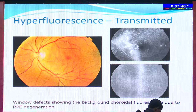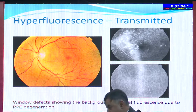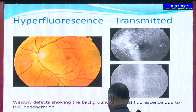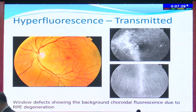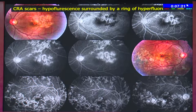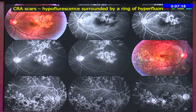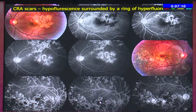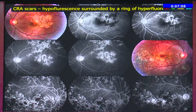Transmitted hyperfluorescence results from retinal pigment epithelial atrophy highlighting the underlying choroidal flush. Window defects showing the background choroidal fluorescence are known as transmitted hyperfluorescence. As seen here, you can see areas of chorioretinal atrophy. Where there is a pigment clump, you see hypofluorescence due to blocked fluorescence, and the hyperfluorescent areas at the margins are where there is an absence of retinal pigment epithelium highlighting the background choroidal flush.